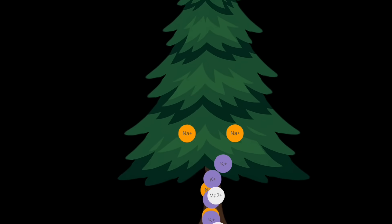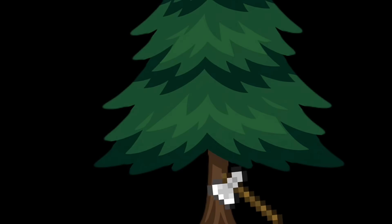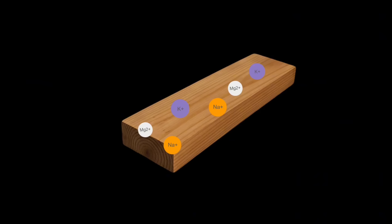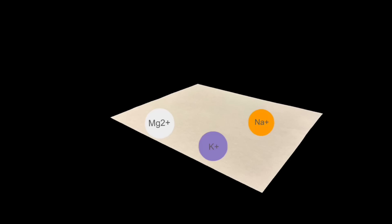As any plant grows, it sucks up nutrients from the ground. These nutrients can contain ions like sodium, potassium, or chlorine. These ions remain incorporated within the tissue of the plant. Even after cutting a tree down, the wood still contains these ions. If I were to turn this wood into paper, the paper would still contain these ions.